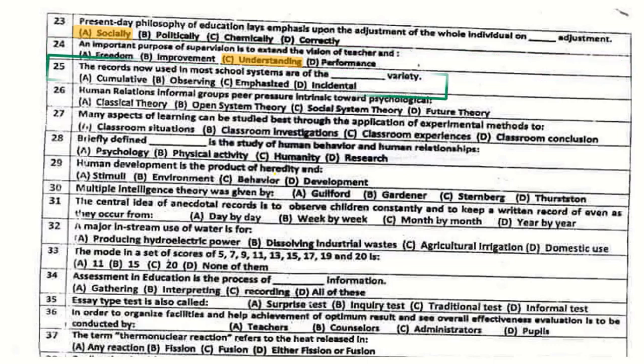Question number 24/25: The records now used in most school systems are of the cumulative variety.